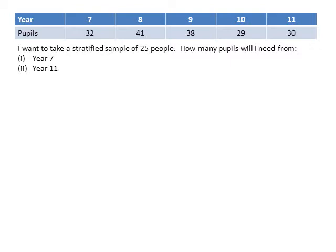In year 8, there are 41 pupils. In year 9, there are 38 pupils. In year 10, there are 29 pupils. And year 11, 30 pupils.